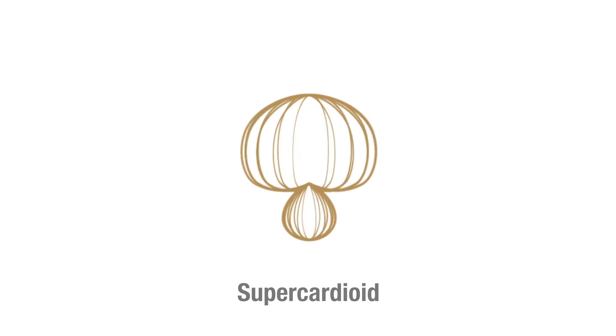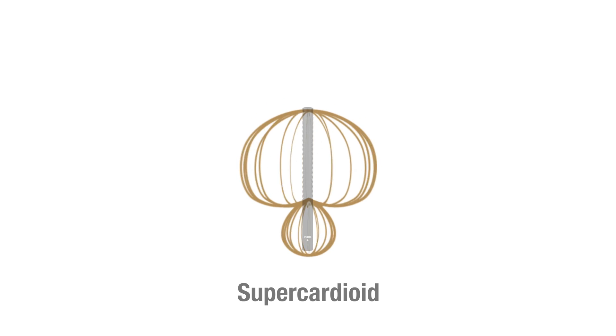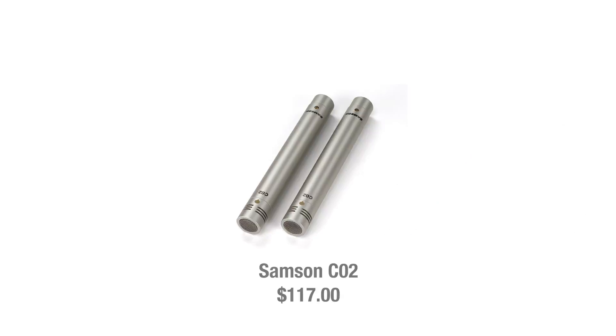The fourth pickup pattern is the supercardioid polar pattern. Like the hypercardioid pattern, this too allows for a more directional pickup, and from the graphical illustration it's easy to see that hypercardioid and supercardioid are very similar. Supercardioid mics work best in screenplay-type situations where everything is scripted. The supercardioid pattern picks up less noise from the back compared to the hypercardioid. A good example of an inexpensive supercardioid microphone is the Samson CO2, which is sold as a stereo pair designed for recording instruments, though still very usable for video.